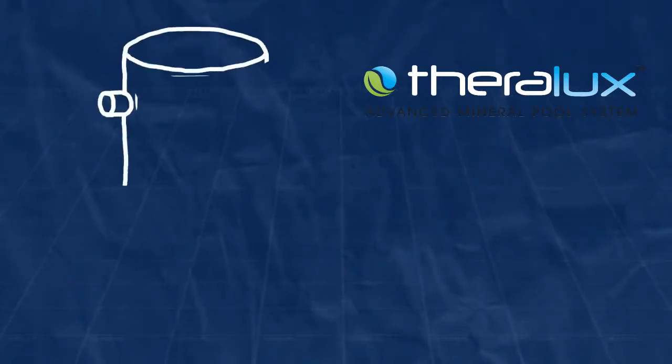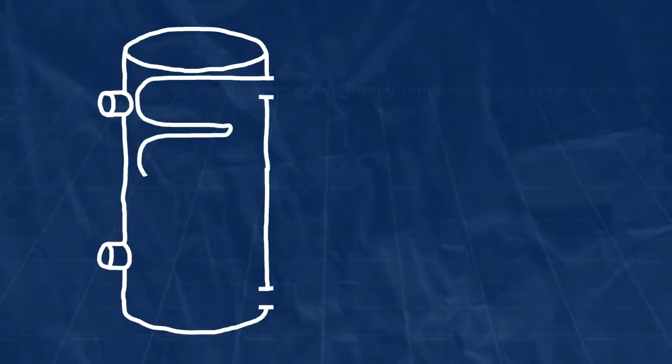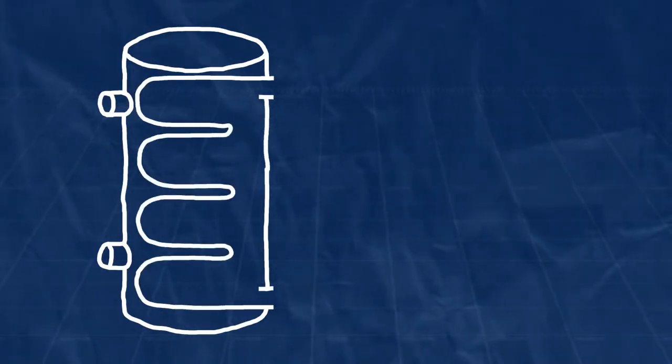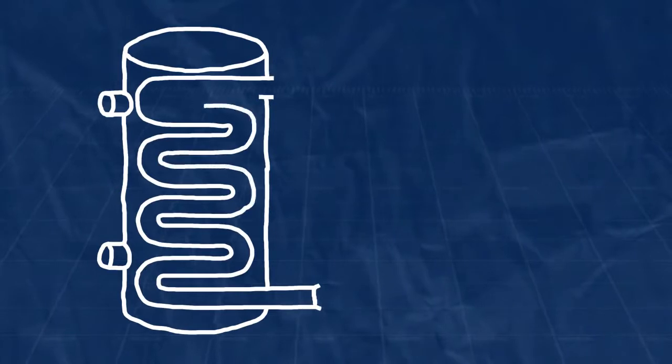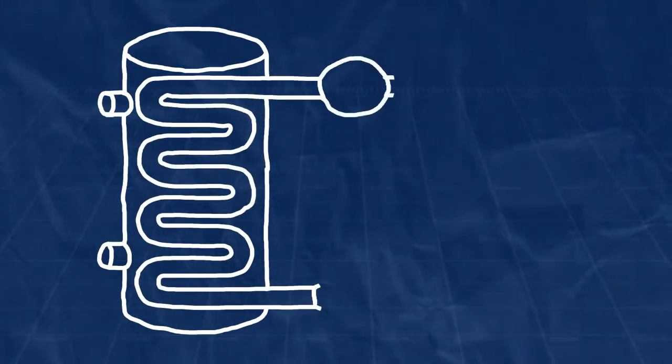This animation illustrates how a heat pump operates. Generally speaking, a heat pump transfers heat from the air in the room to the water in the tank with the aid of a substance called a refrigerant.